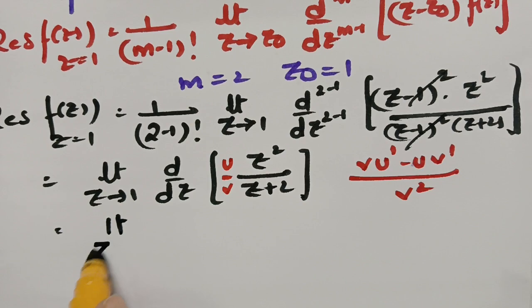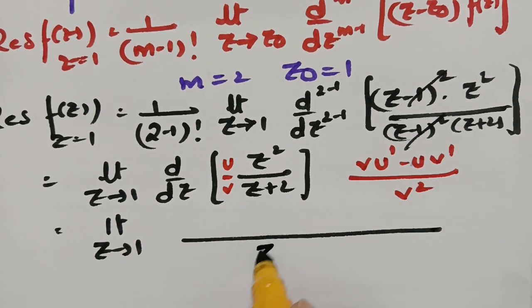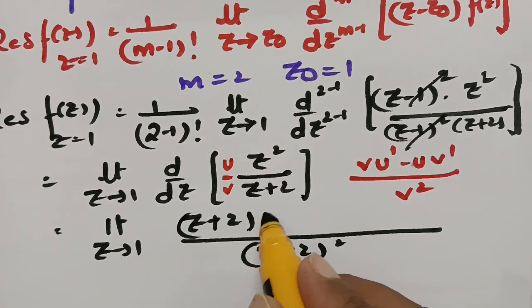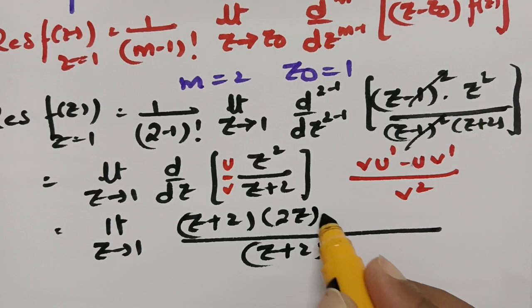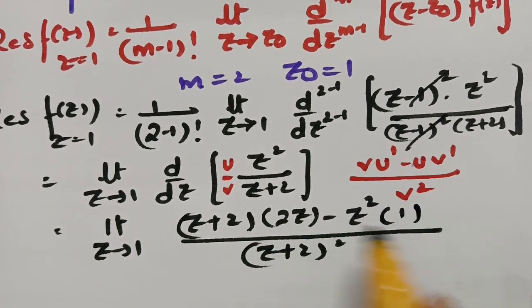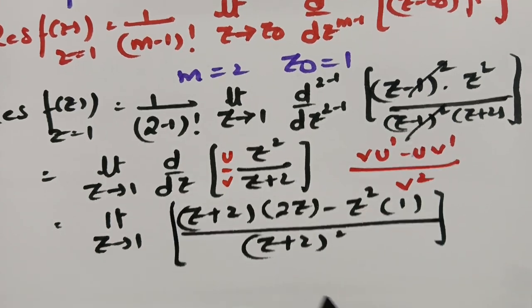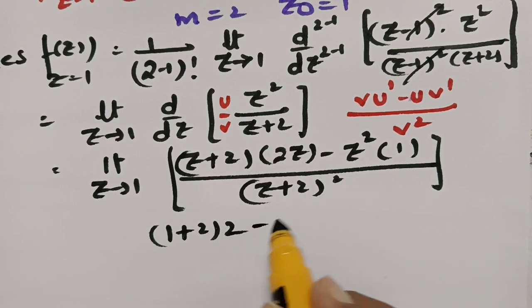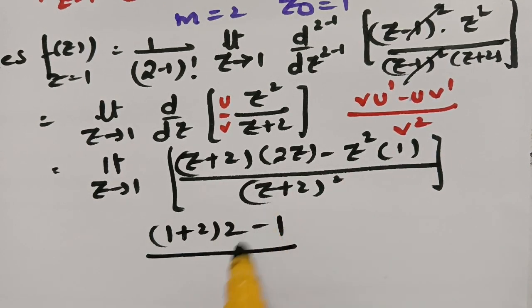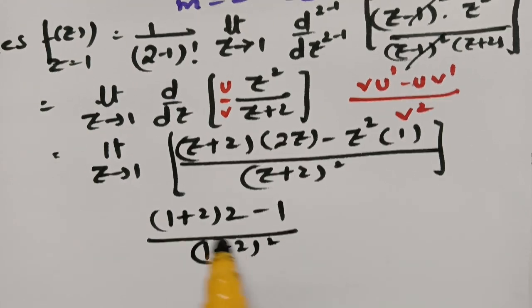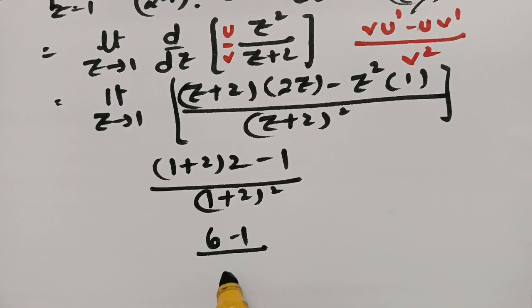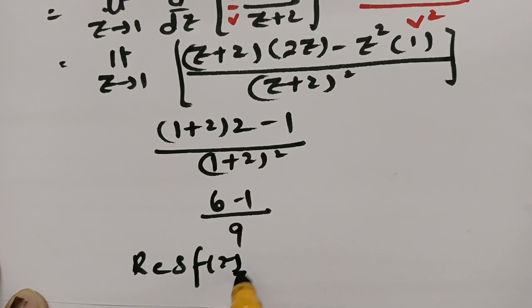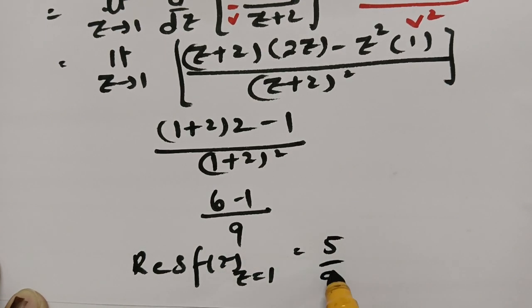Taking the limit as z→1: numerator = (1+2)·2(1) − (1)² = 3·2 − 1 = 6 − 1 = 5; denominator = (1+2)² = 3² = 9. So the result is 5/9.